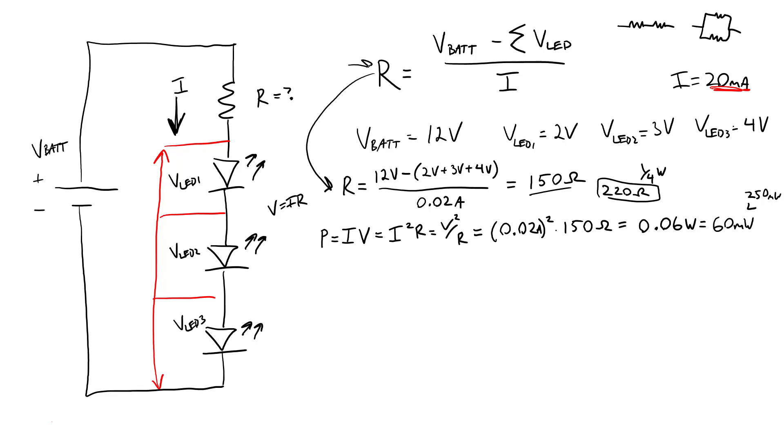Then we can rearrange this equation to solve for the actual current if we have a known resistor value. So we're going to do that by flipping the equation around to say the current is equal to the battery voltage minus the sum of the LED voltages divided by the resistance. So again, we can now plug in our numbers where we have our new known resistance of 220 ohms and our current is unknown.